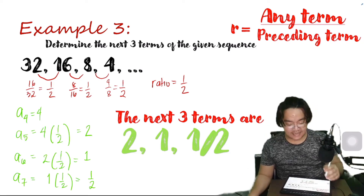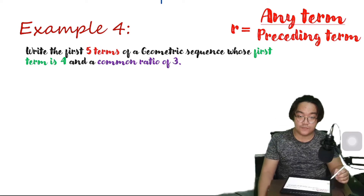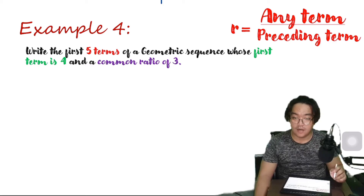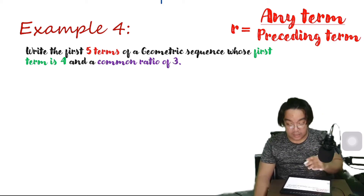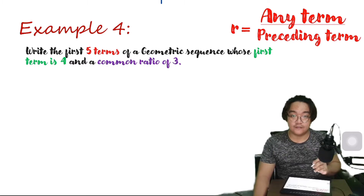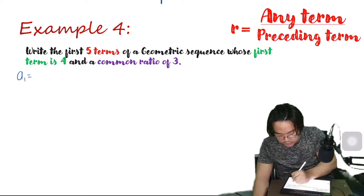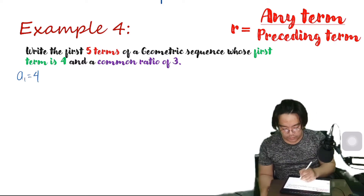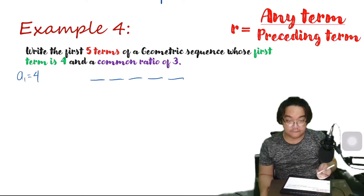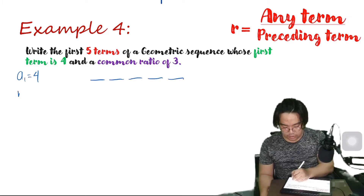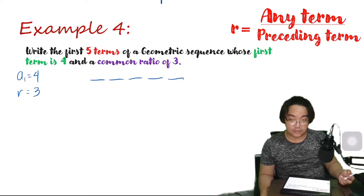So let's have our last example. Write the first five terms of a geometric sequence whose first term is 4 and a common ratio of 3. Let's list down what we have from the given. The first term is equal to 4, we are looking for five terms, and our common ratio is equal to 3. So let's find the first five terms.